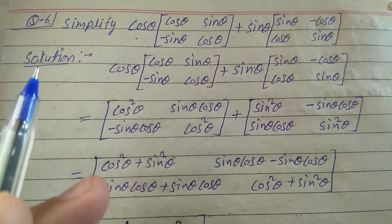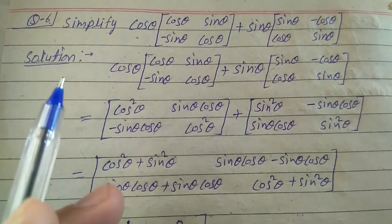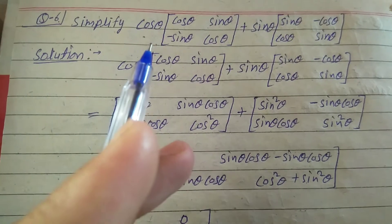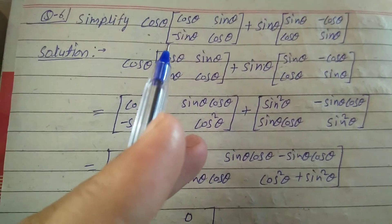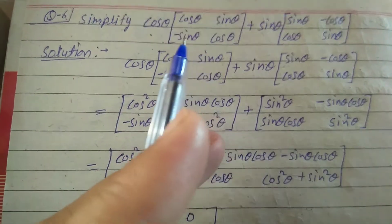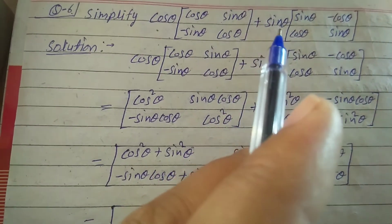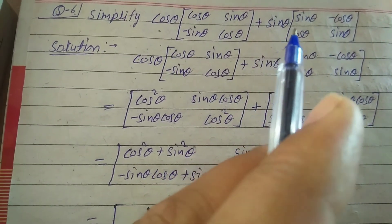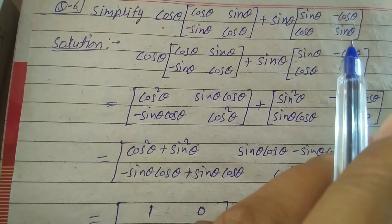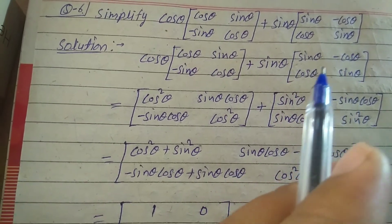Explain question number 6 of exercise 3.2 of class 12th. Simplify cos θ multiplied by the matrix [cos θ, sin θ; -sin θ, cos θ] plus sin θ multiplied by the matrix [sin θ, -cos θ; cos θ, sin θ].